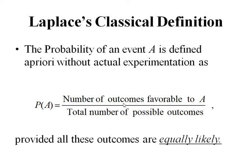It is given as the ratio of number of favorable outcomes to the event A to the total number of possible outcomes, provided that all these outcomes are equally likely.